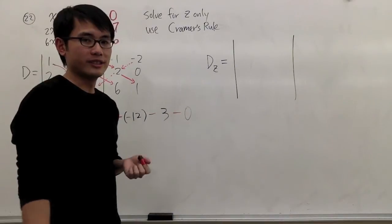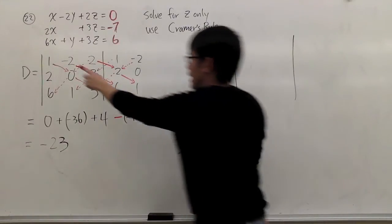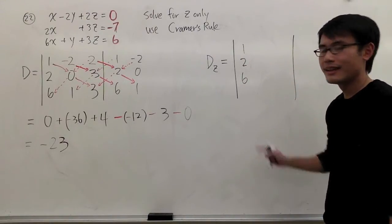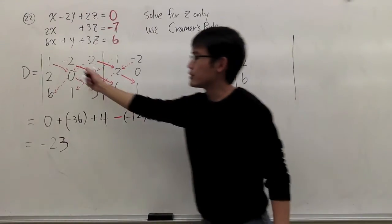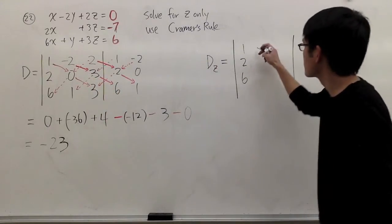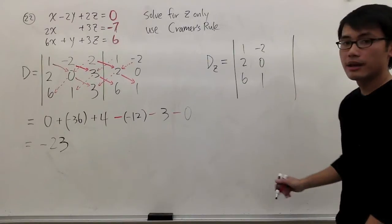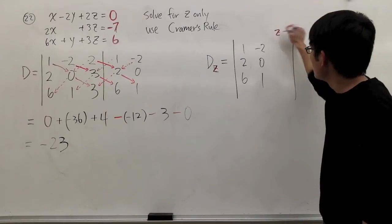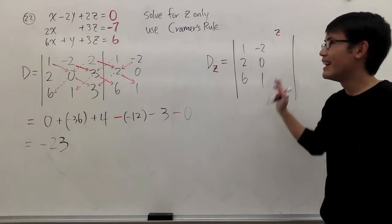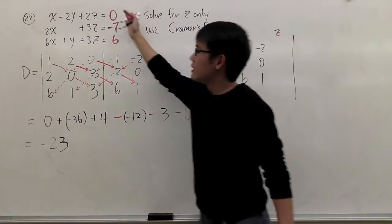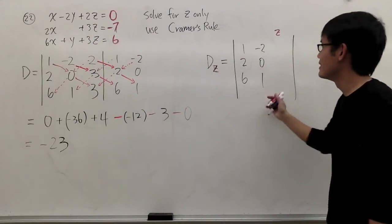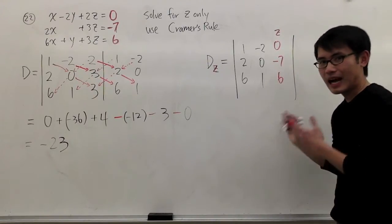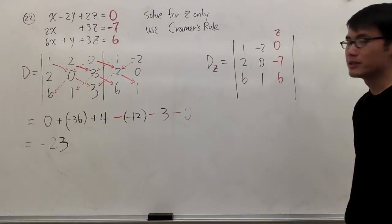If you want to find Dz, the x and y column will stay the same. So for Dz, I will still have 1, 2, 6 for the first column, 1, 2, 6. And for the second column, I will still have negative 2, 0, and 1. And because we're looking for Dz right here, the z column is the only column that's going to be changed. And we are going to replace these numbers to the z column. So we have 0, negative 7, and 6. That's how we set this up. So that's how we come up with Dz.